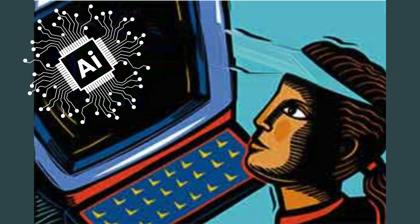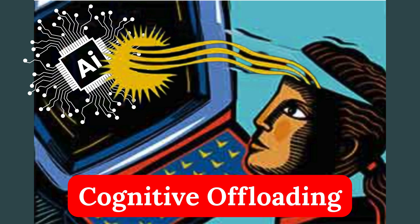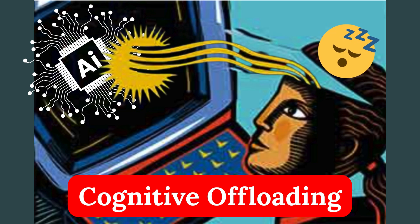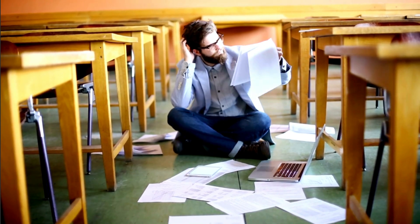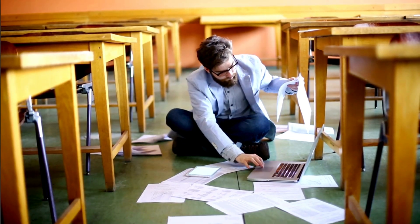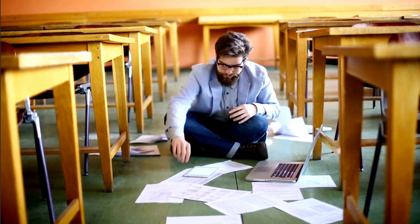Overusing AI tools like ChatGPT can weaken your critical thinking skills, which are important for success in school and in life. Research shows that when students depend too much on AI, they stop thinking for themselves. This is called cognitive offloading — it means that you let technology do the thinking instead of analyzing problems on your own. As a result, you may struggle to understand difficult ideas, build logical arguments, or question assumptions — skills that are necessary for higher-level academic work and in your professional life.